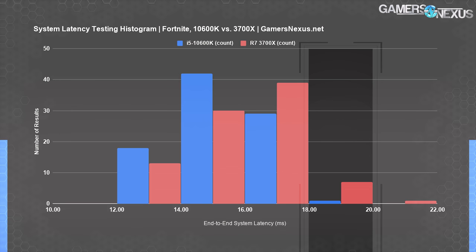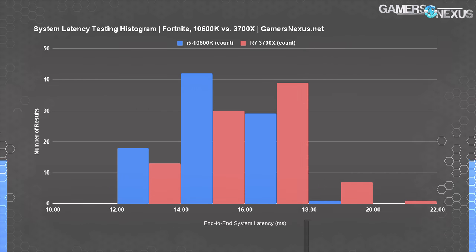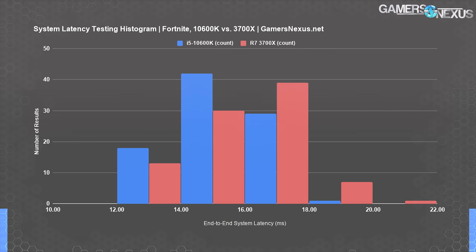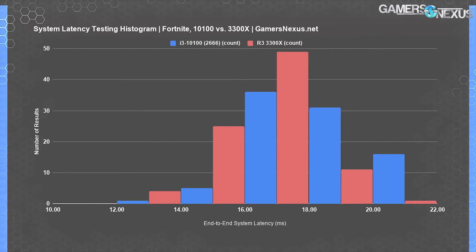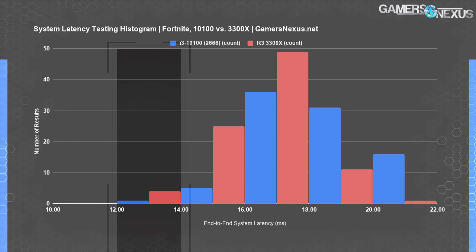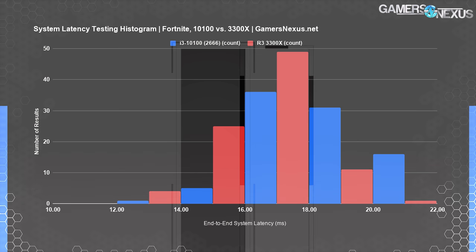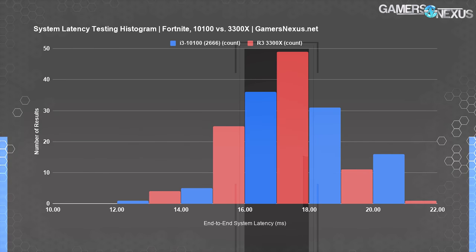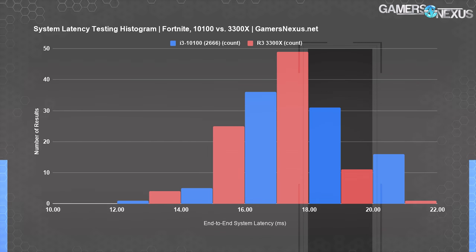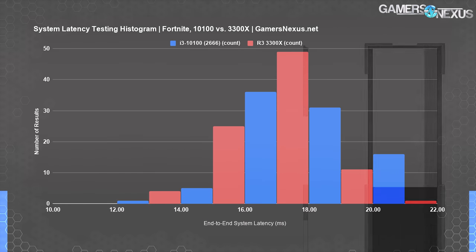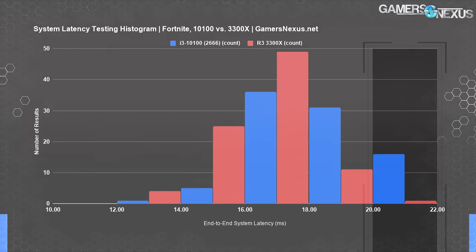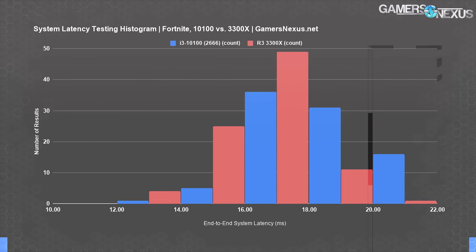The 10600K objectively plotted lower in total system latency, but the value of that enters sort of subjective territory where the numbers at this degree of lowness become questionable in terms of how much you can actually notice the differences. The 3300X versus 10100 histogram shows the 3300X has far more 14 to 16 millisecond results at 25 versus 5, and more 16 to 18 millisecond results at 49 to 36. The 10100 brings up the slower end, offering more entries between 18 and 22 milliseconds. This is repeatable and is a real difference in a test lab.